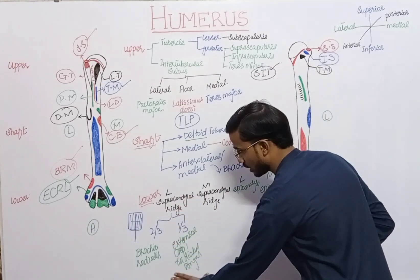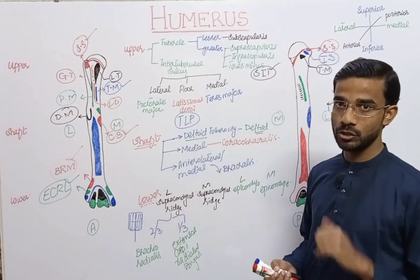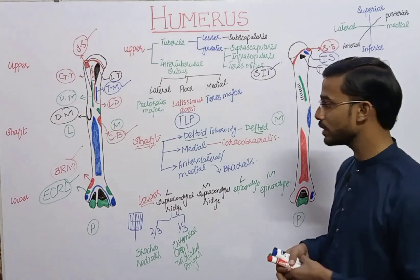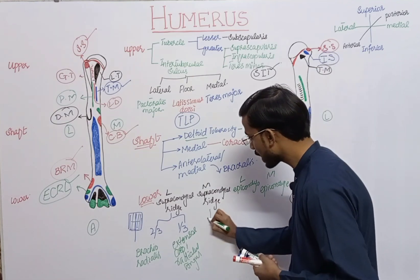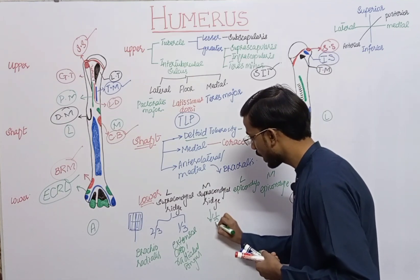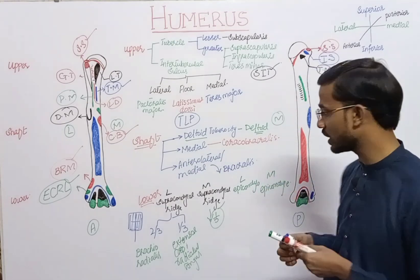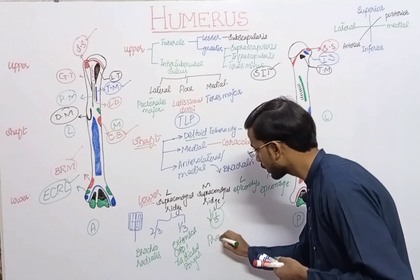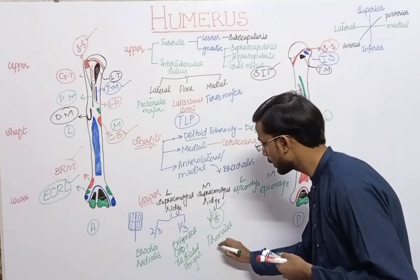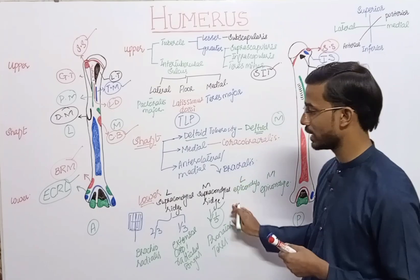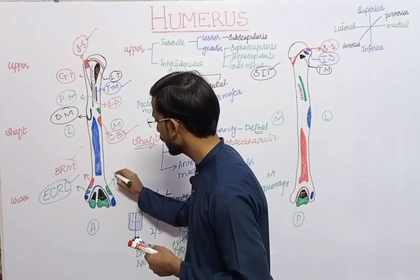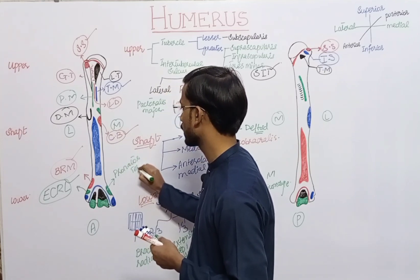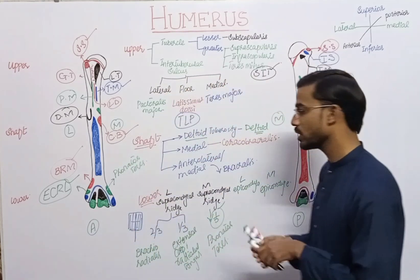At the medial supracondylar ridge, at the lower one-third portion, pronator teres will attach. Here you can see this is the pronator teres muscle which attaches to the medial supracondylar ridge.